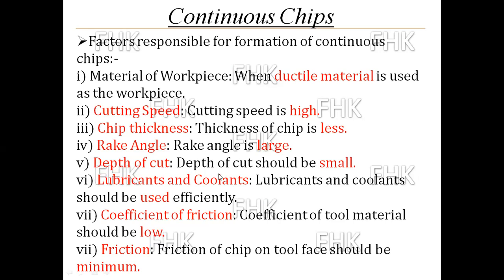The fourth factor is depth of cut — when the depth of cut is small, continuous chips form. Fifth, lubricants and coolants should be used efficiently; when they are used properly, there is no breakage and you get continuous chips. Sixth, the coefficient of friction of the tool material should be low. Finally, friction of the chip on the tool face should be minimum for continuous chips to form.